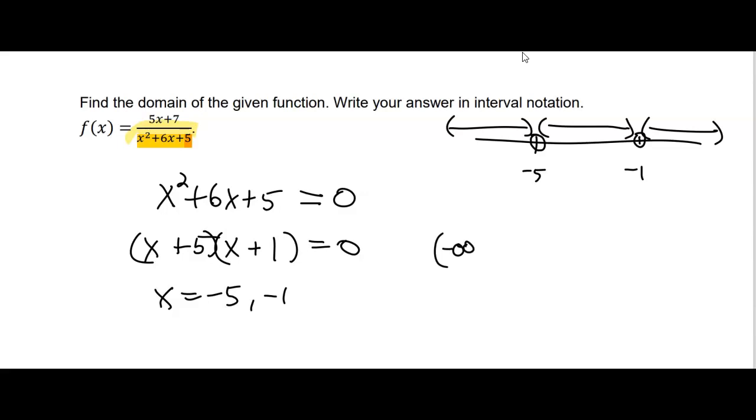Combined together, that would be negative infinity to negative 5, soft bracket. Don't use a hard bracket because then you've, again, divided by zero. Union from negative 5 to negative 1. Union from negative 1 to infinity. All soft brackets because we don't want to divide by zero and we can't include infinity.